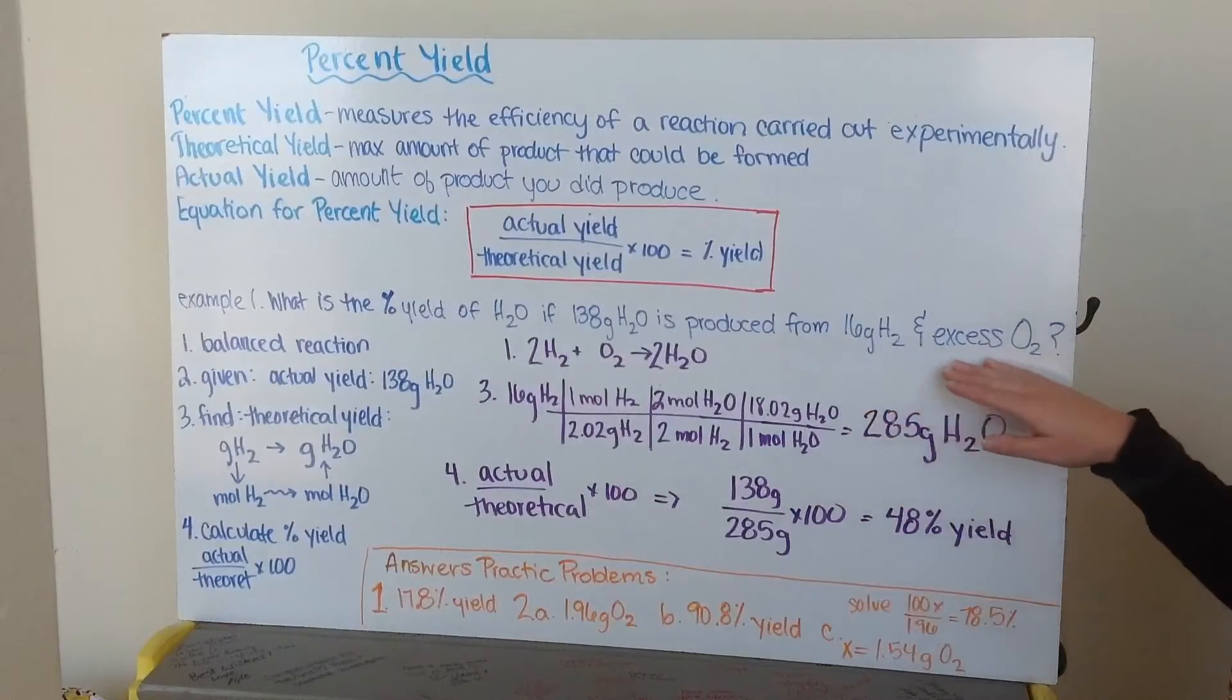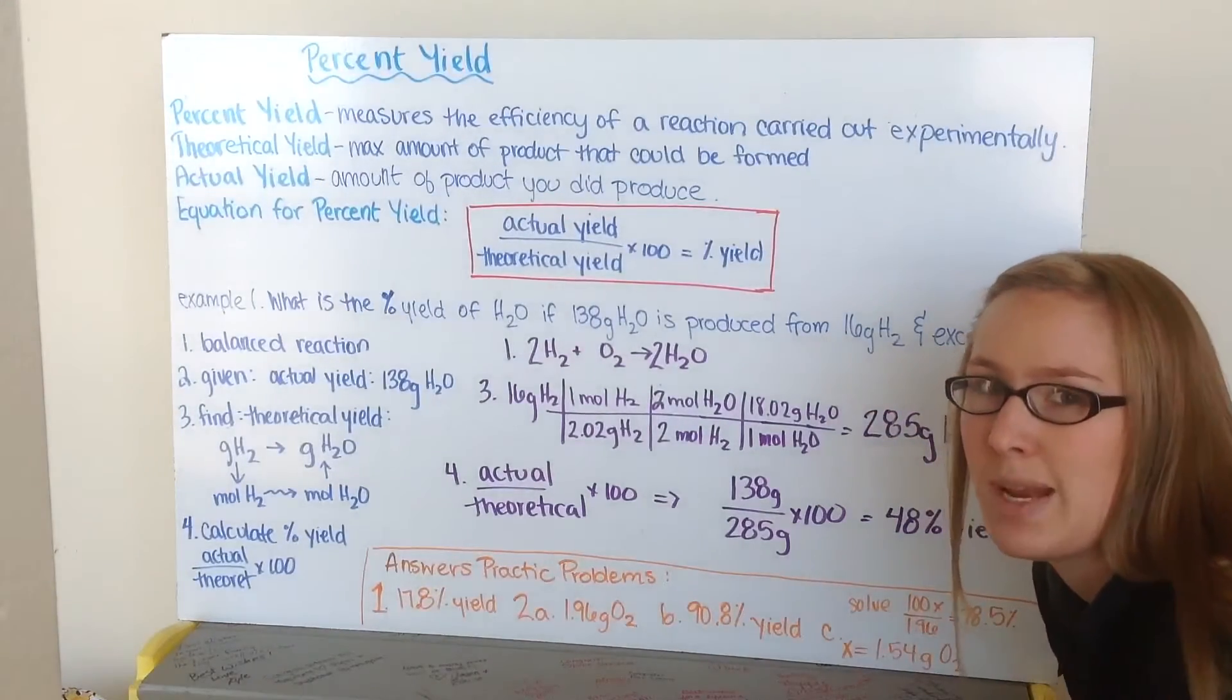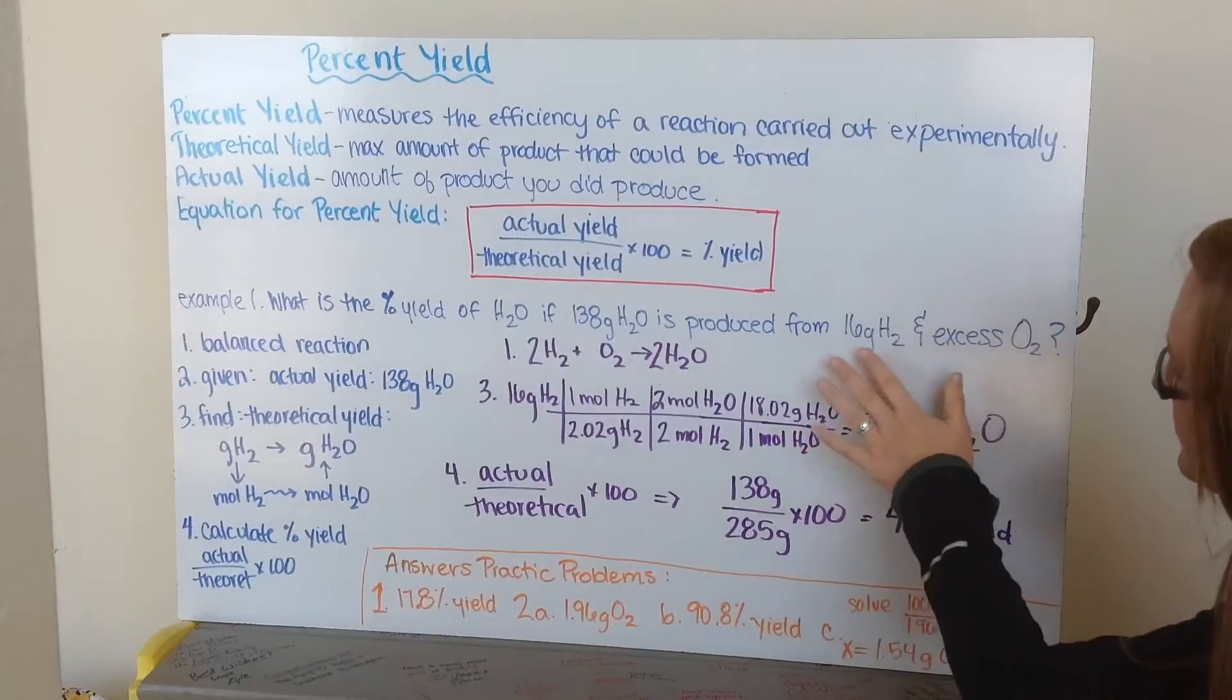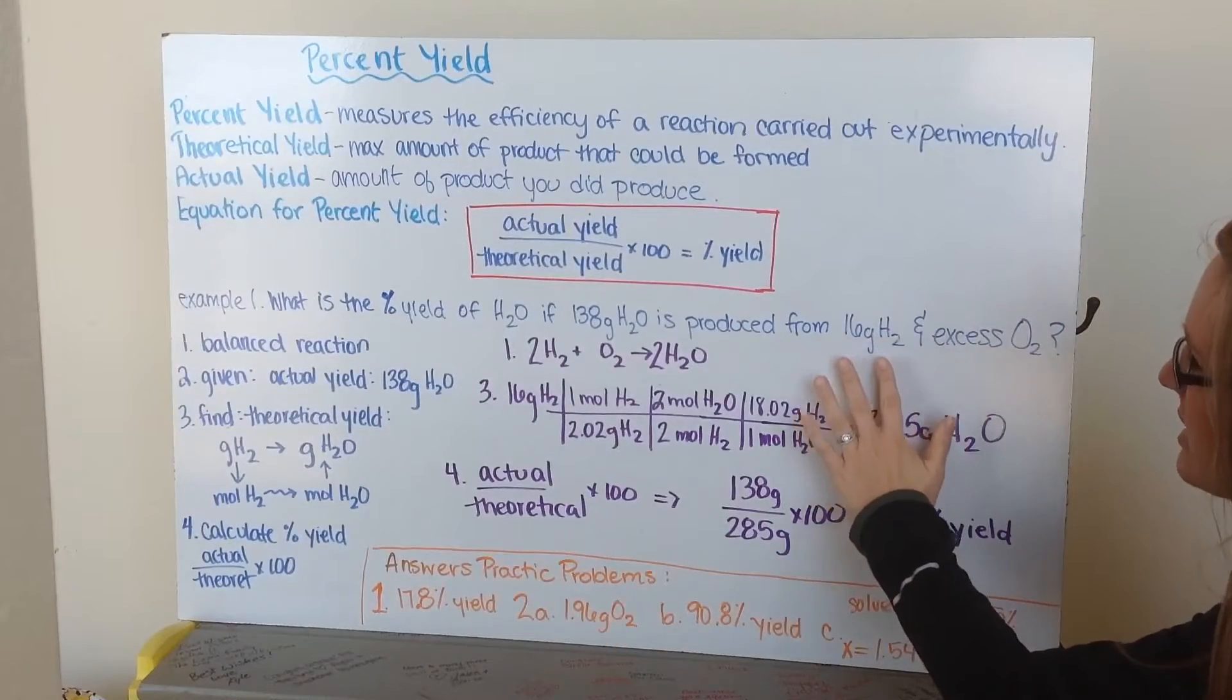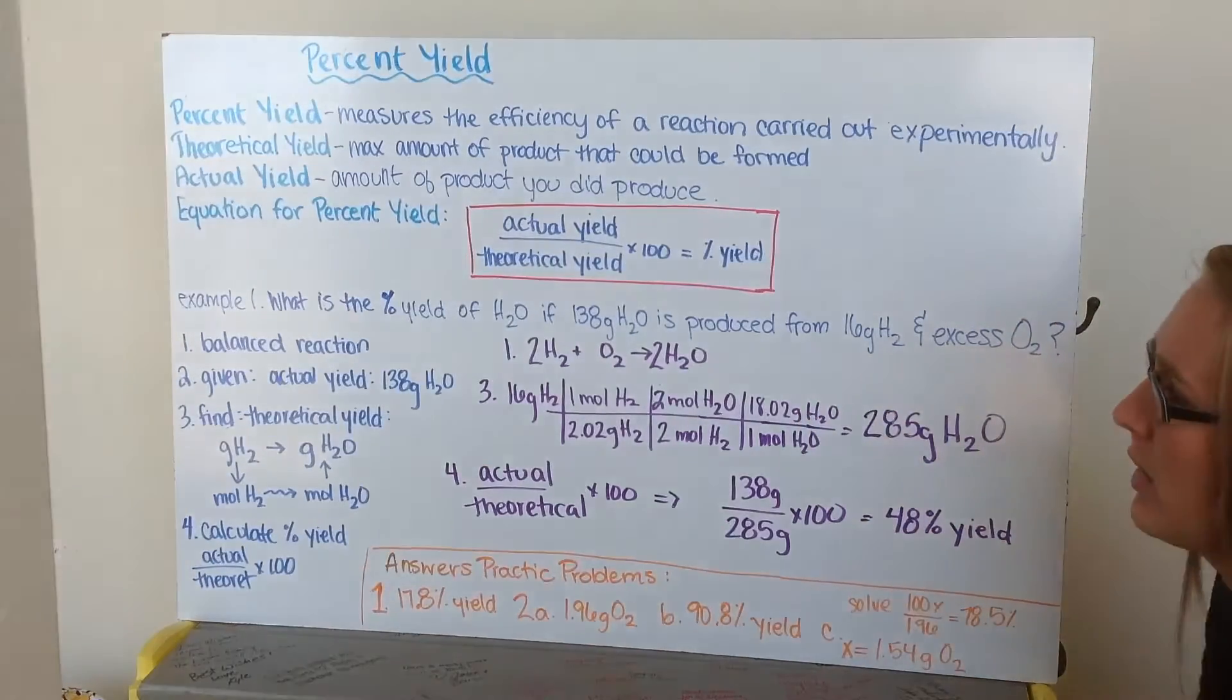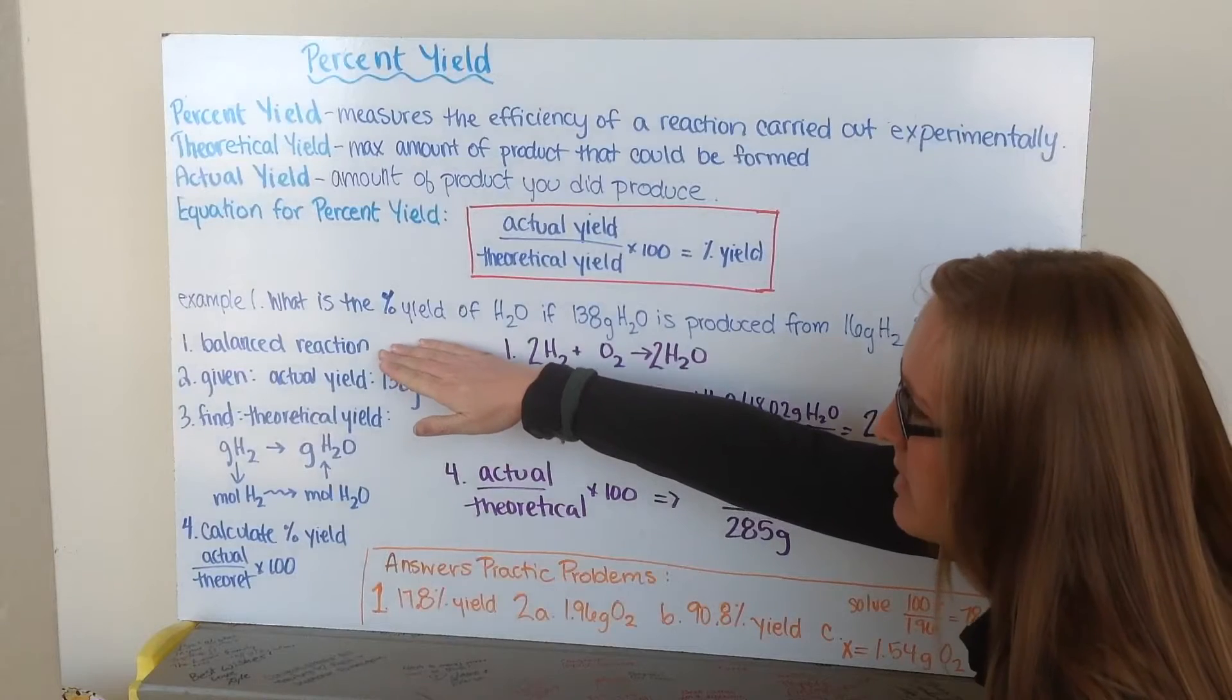Because I told I have excess oxygen, that's not going to play a factor into how much is made. I had copious amounts of oxygen gas. But I did have only 16 grams of hydrogen gas. So that's going to determine how much was actually made. The first thing I need is a balanced chemical equation.